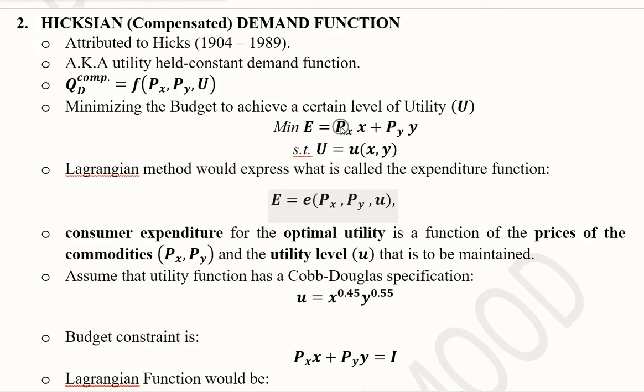It is actually an objective function here, whereas it was a constraint before. Here the constraint is the utility function, whereas in the Marshallian demand function it was the objective function. So things are inverted here.